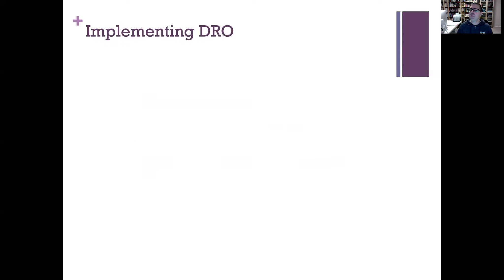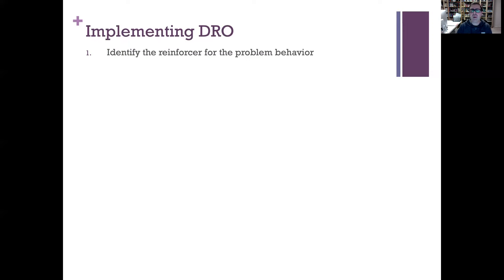When implementing DRO, clinicians first identify the reinforcer for the problem behavior through a functional assessment or experimental functional analysis. With Jacob, the trial-based functional analysis showed that adult attention maintained the problem behavior. The same reinforcer identified as maintaining the problem behavior is then used in the DRO procedure — adult attention is delivered contingent on the absence of problem behavior.